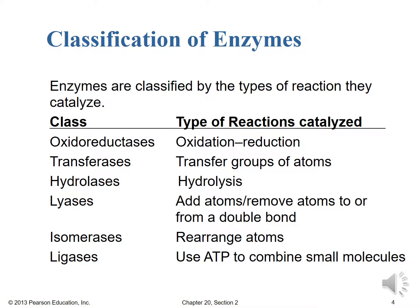So we said that we're going to look at classification of enzymes. Enzymes are classified by the types of reaction they catalyze. So here we have classes such as oxidoreductases and they catalyze oxidation reduction reactions, logically enough.